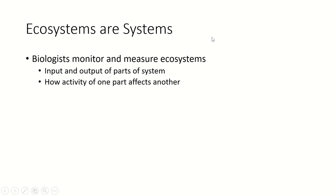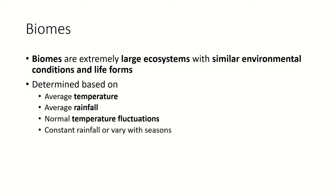Ecosystems are systems, which means biologists are able to monitor and measure the system and measure how the activity of one part of the system affects the other parts. We can talk about different kinds of ecosystems at different sizes.